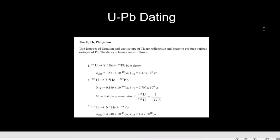To address this, the mineral zircon is used for uranium-lead dating. Zircon solves both issues by concentrating uranium and excluding lead from its mineral structure. Zircon has a high hardness of 7.5, which makes it resistant to mechanical weathering, and it is also very resistant to chemical weathering.